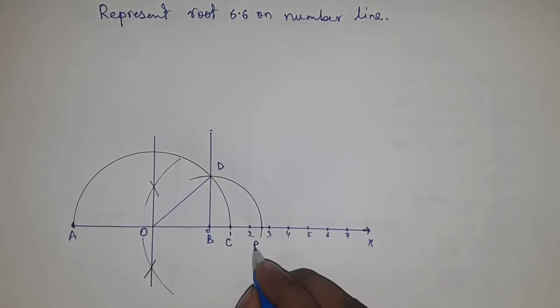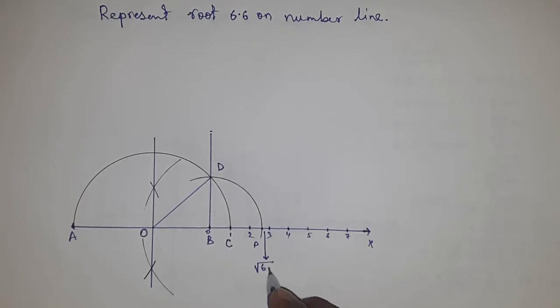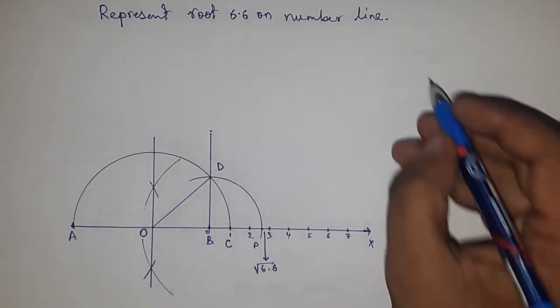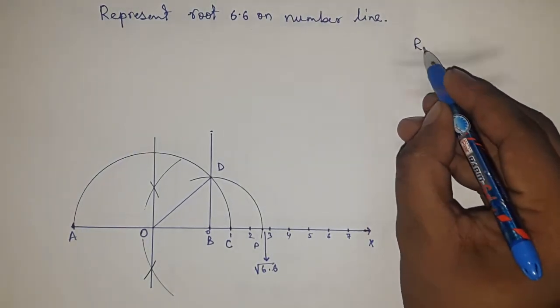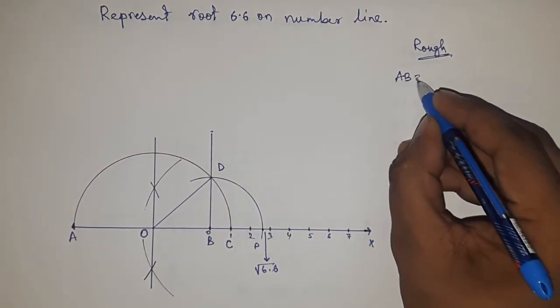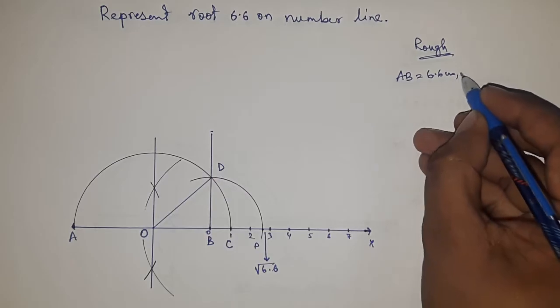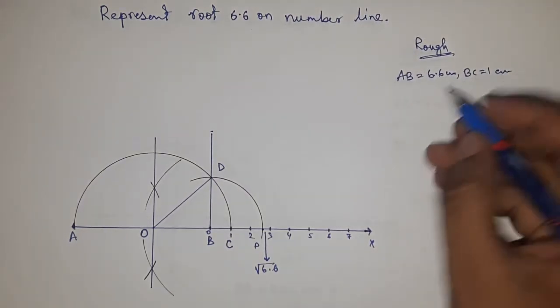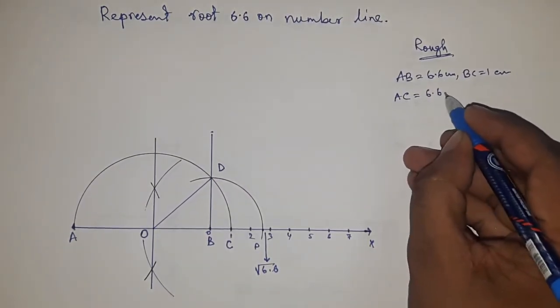This is the representation of root 6.6 on the number line. Now roughly calculate the root 6.6. Given: AB equals 6.6 cm, BC equals 1 cm, so AC equals 6.6 cm plus 1, which equals 7.6 cm.